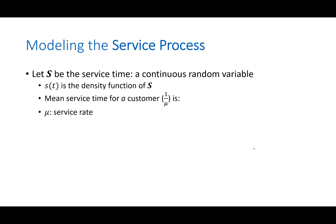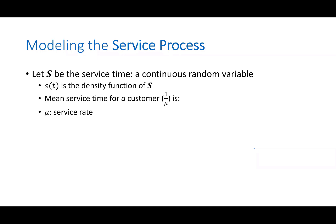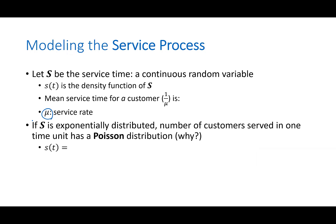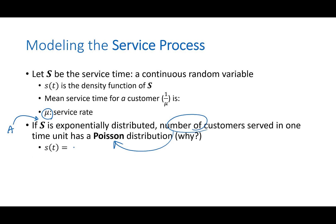The time a bank teller serves the first customer and then the next customer is exponentially distributed. Instead of lambda, we call it mu — the service rate — the number of people you serve in every time unit. If the service time S is exponentially distributed, then the number of customers served in one time unit follows a Poisson distribution, just as with arrivals, but using mu instead of lambda. The PDF involves mu times e to the power of negative mu times t.